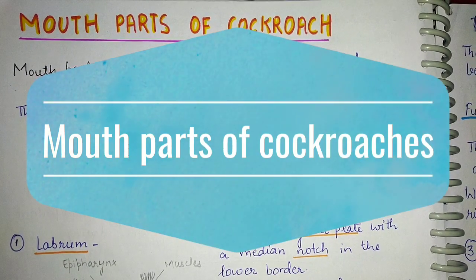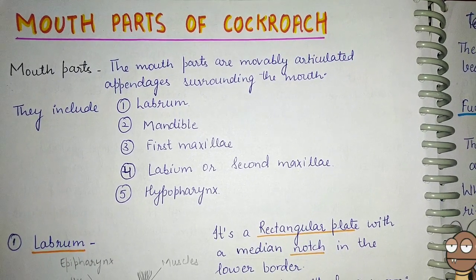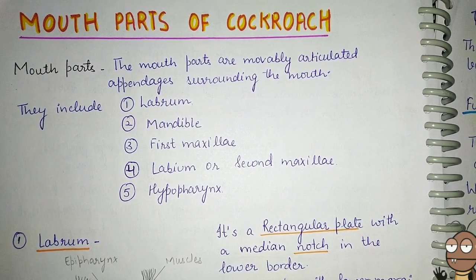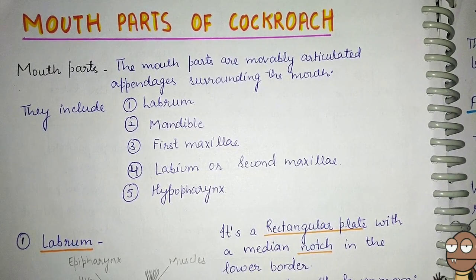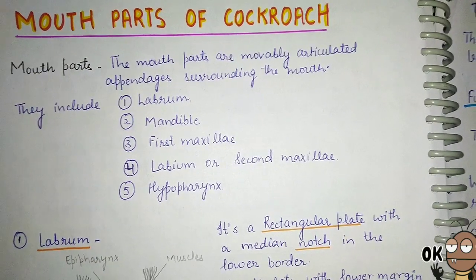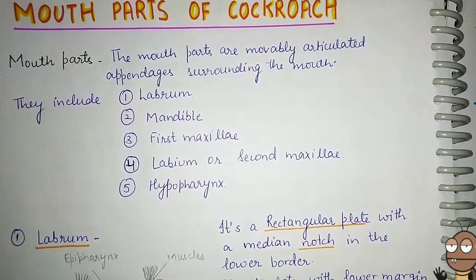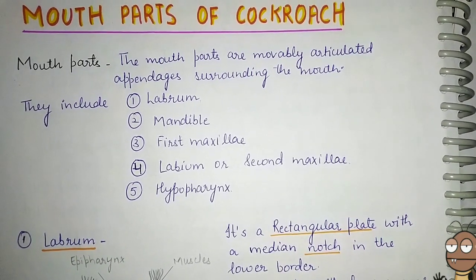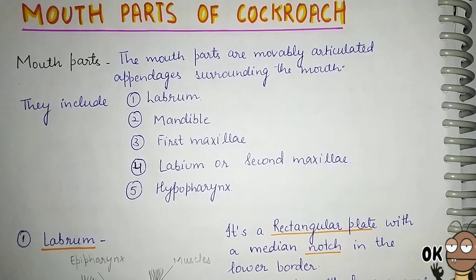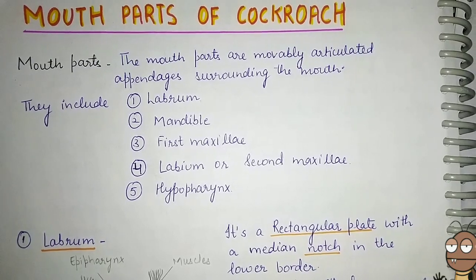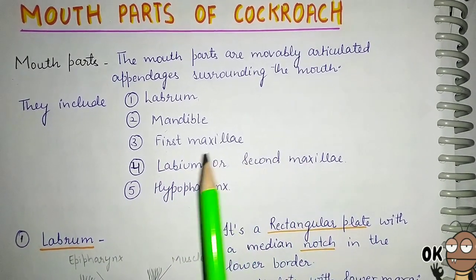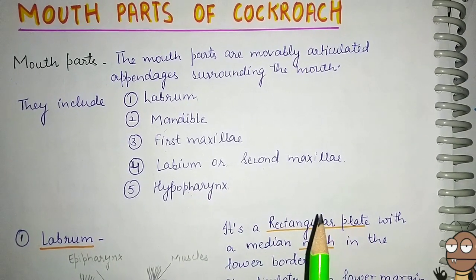Hello friends, in this video we are going to study about the mouthparts of cockroaches. The mouthparts are present in the pre-oral cavity. They are movably articulated appendages attached around and surrounding the mouth of the cockroach. They help in masticating and cutting the food. There are total five different kinds of appendages: the labrum, mandible, first maxillae, labium (or second maxillae), and the hypopharynx.